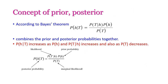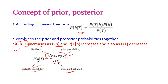According to Bayes' theorem, when the posterior probability P(H|T) increases, the likelihood and prior probability also increase — these two things increase together. And P(T), the marginal likelihood, will decrease. That means the posterior probability, likelihood, and prior probability are directly proportional to each other — if one increases, the others also increase; if one decreases, the others also decrease. But when it comes to posterior probability and marginal likelihood, these two are inversely proportional to each other.